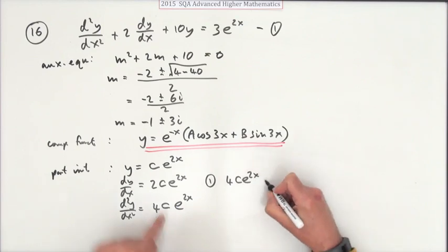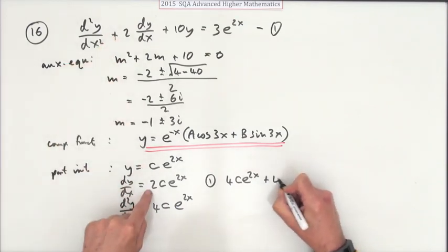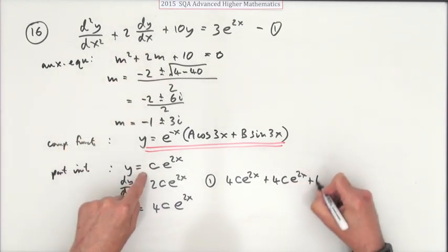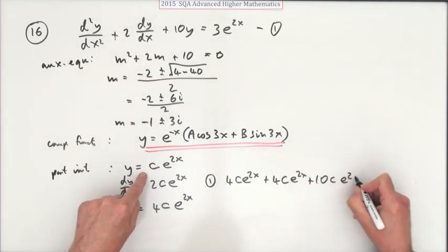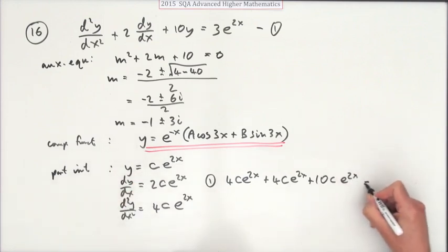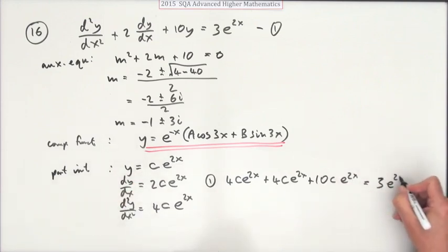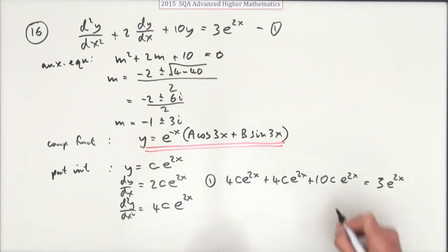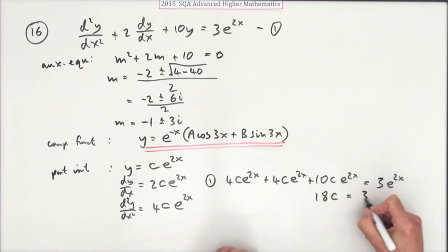4ce^(2x) + 2 of these, plus 4ce^(2x) + 10 of them, plus 10ce^(2x), and that lot should equal 3e^(2x). Well, e^(2x) can all go because the coefficients, or just compare the coefficients if you want. 4 and 4 and 10, that's 18, so you've got 18c is equal to 3, so c is a sixth.